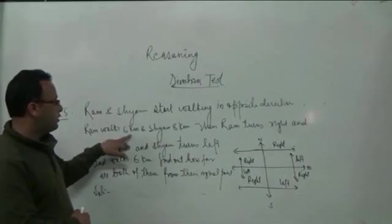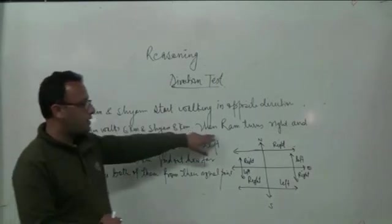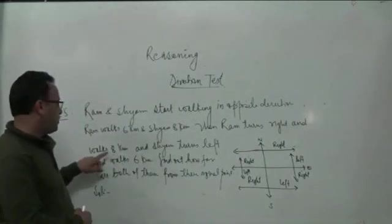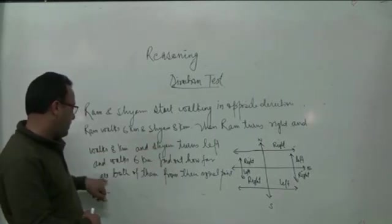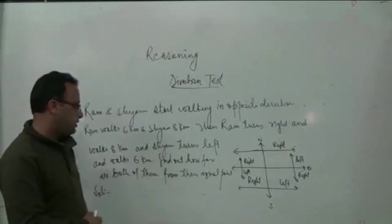Ram walks 6 km and Shyam 8 km. Then Ram turns right and walks 8 km. Then Shyam turns left and walks 6 km. Find out how far are both of them from their original point.